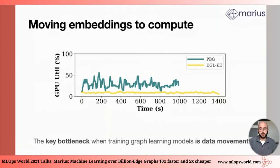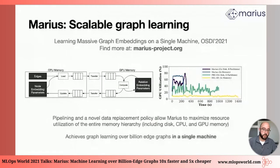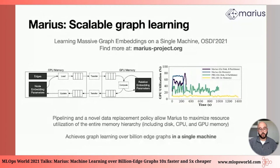This is exactly the bottleneck that Marius addresses. In Marius, we show how one can learn massive graph embeddings on a single machine using pipelining, which is quite standard for masking IO and compute. We also introduce a novel data replacement policy — which I'm going to describe later — to actually maximize resource utilization of the entire memory hierarchy and our compute. You see here in the plot that Marius can actually achieve utilization close to 70% for in-memory use cases, and close to 60% for on-disk use cases. And this is exactly the recipe that allows us to scale graph learning over billion-edge graphs, as I'll show you next, using a single machine.